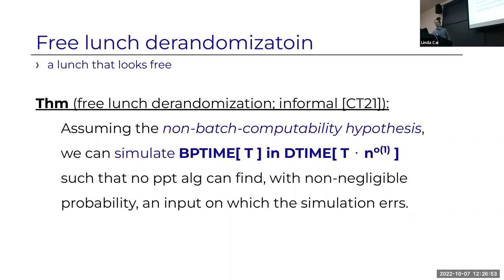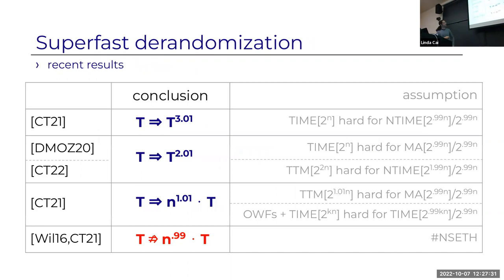The assumption is completely uniform—there's no non-uniform advice, no PRGs. This works in a non-black-box way: if there is a probabilistic algorithm that gets an input and we want to simulate it, we just use information from the input without the classical non-uniform circuit machinery. You killed the non-uniform advice, which is precisely why you avoid it.